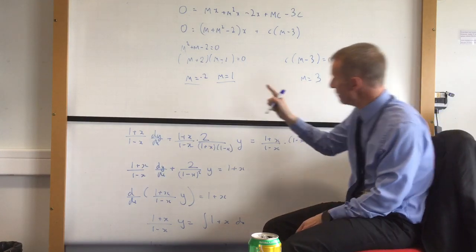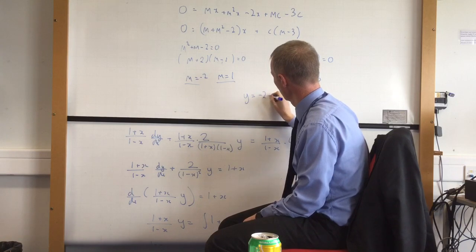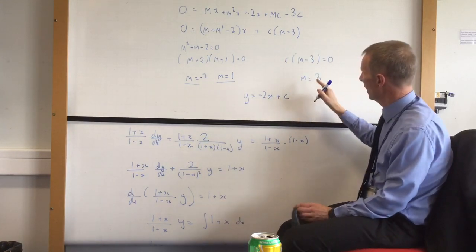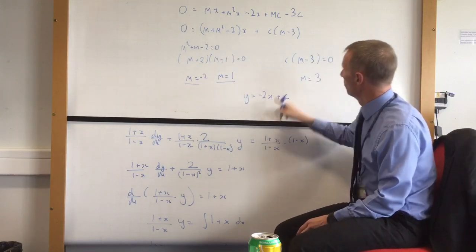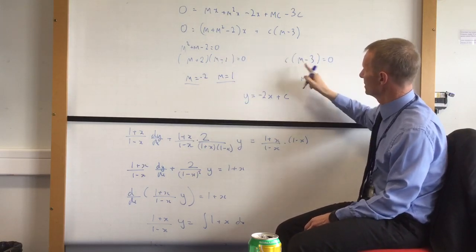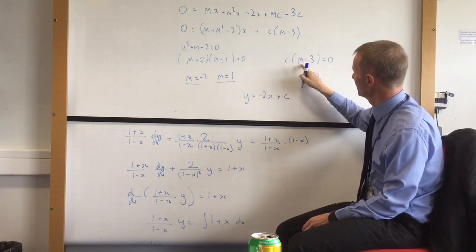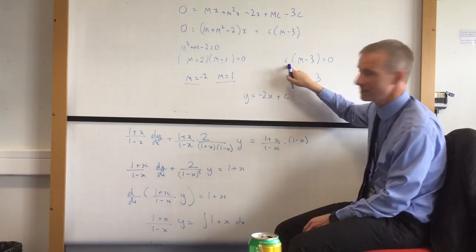So if I had the line, let's look at this one. If I had the line y equals minus 2x plus c, right, then that bit would be 0, but that bit wouldn't be 0, would it? So the only way that bit is going to be 0, because m is minus 2, is if that thing itself is 0, so c's got to be 0 as well.